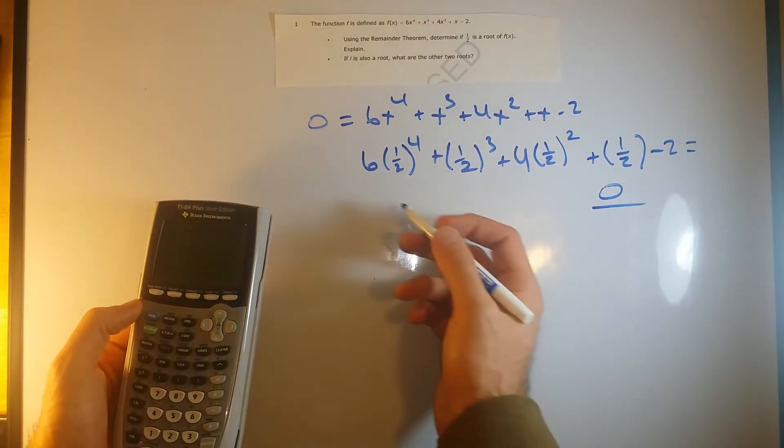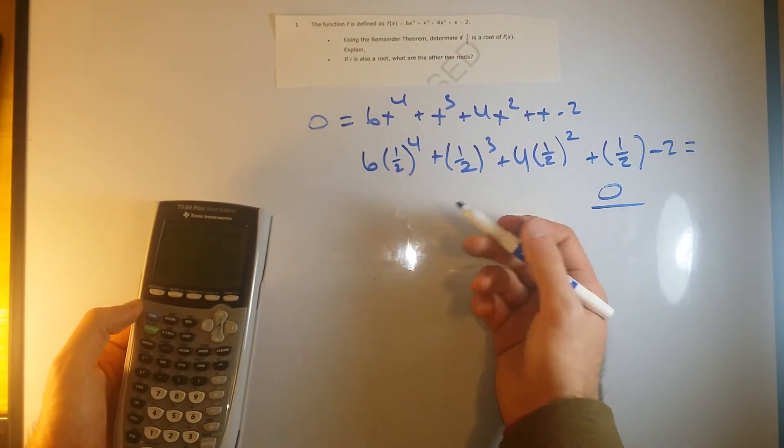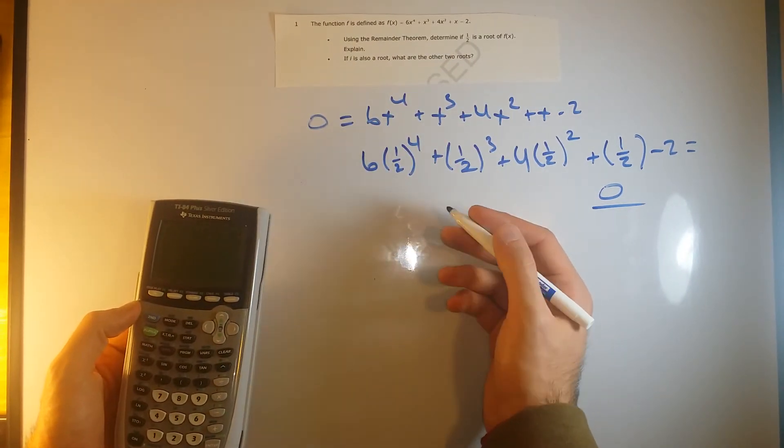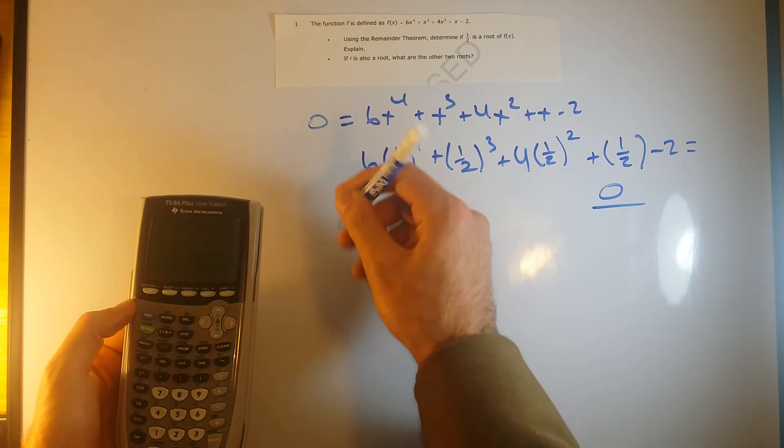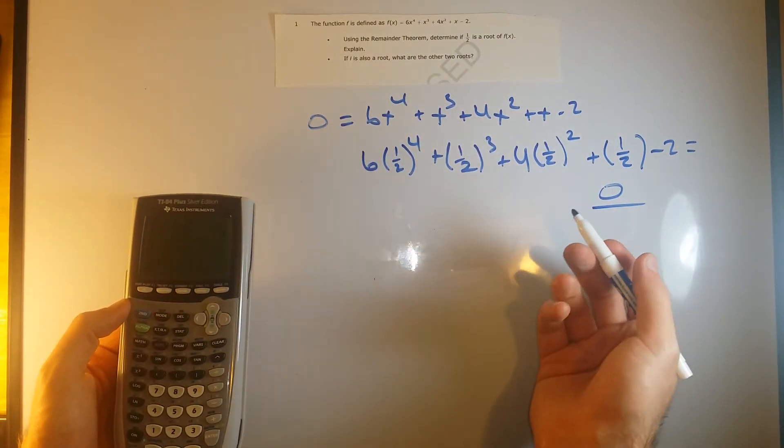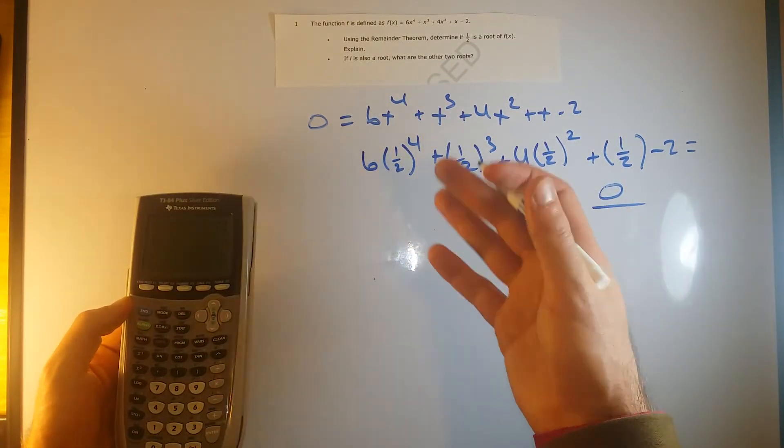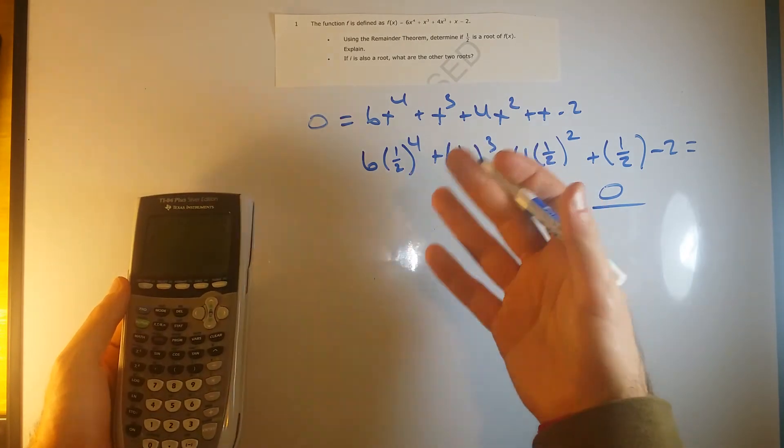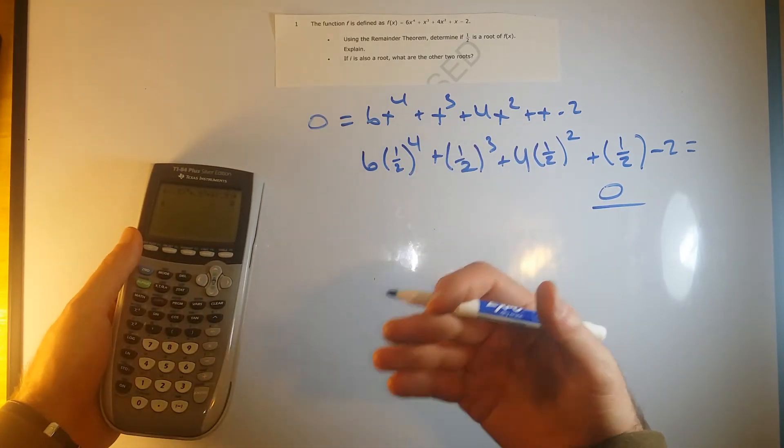So yes, I just proved then that 1 half is indeed a root, or 0.5 is a root. And to explain your answer here, just say something like what I said when we opened up, what it means to be a root, and how you can use your remainder theorem.